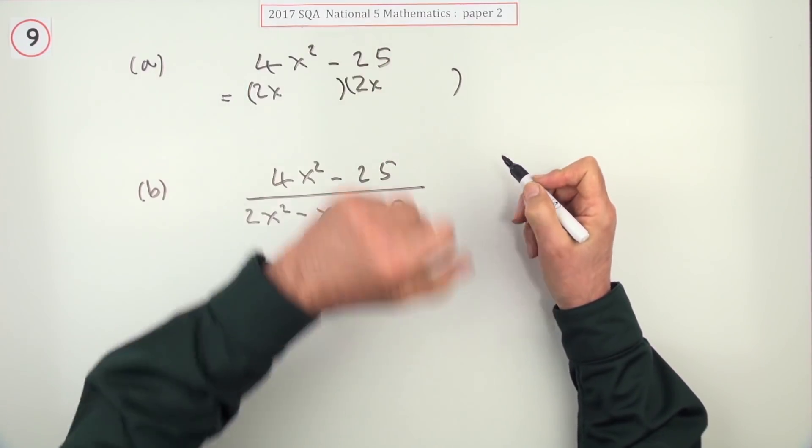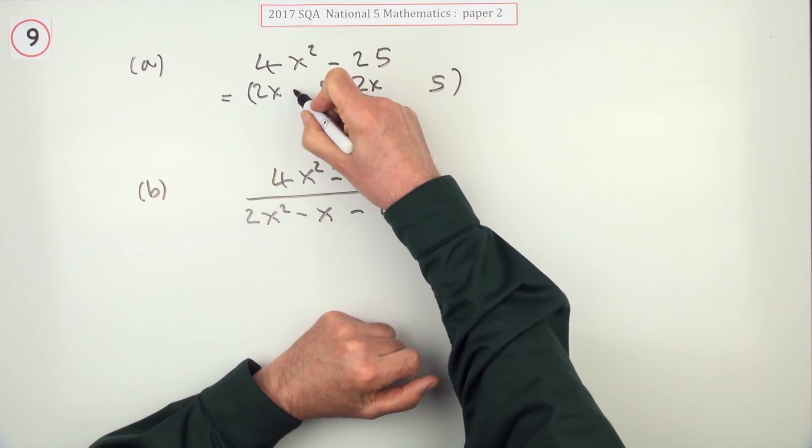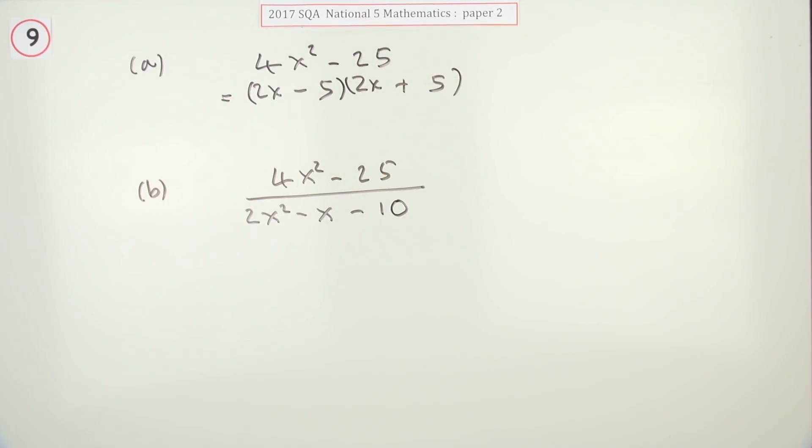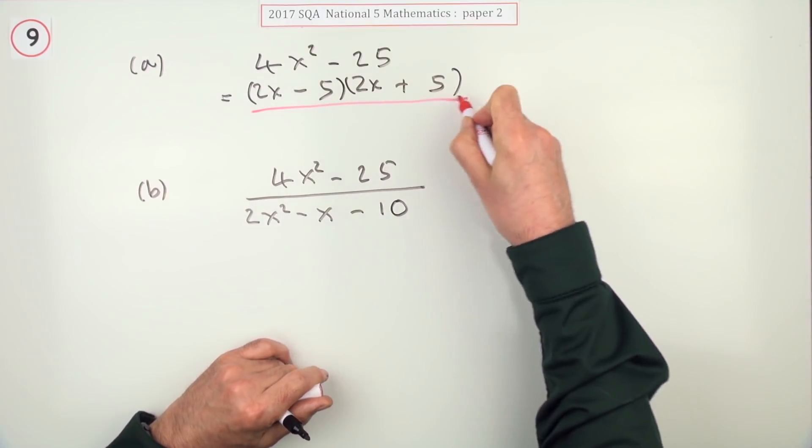And what's being squared to make this must be 5 times 5. And it's a minus then a plus. So there's your first mark.